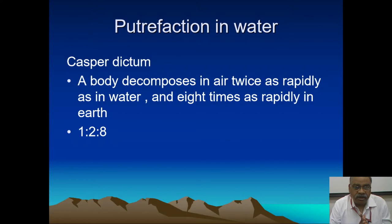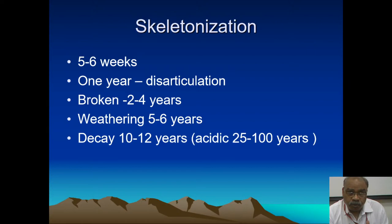Skeletonization occurs when the whole body is present as bones. When soft tissue destruction occurs and animals are present, or the body is dismembered, it may take five to six weeks, but usually it takes six months to one year. One year is mainly for joint disarticulation. Up to six months to one year, you can get long bones well united with their tendons, but disarticulated and separated after one year or so.